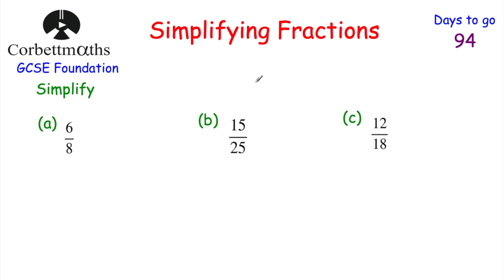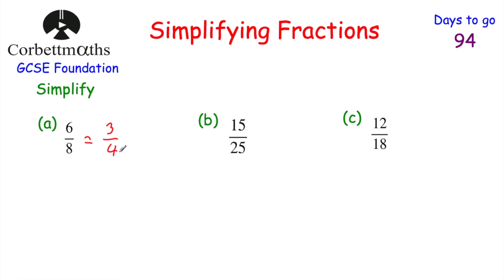Now let's look at simplifying fractions. We have three fractions to simplify. First, 6 eighths: 6 and 8 are both divisible by 2, so divide both by 2 — 6 divided by 2 is 3, 8 divided by 2 is 4. So 6 eighths simplifies to 3 quarters.